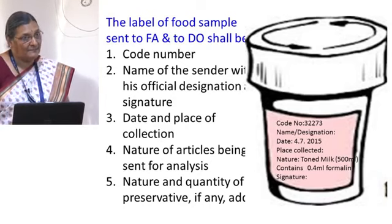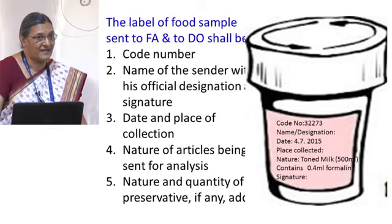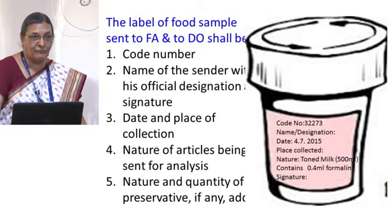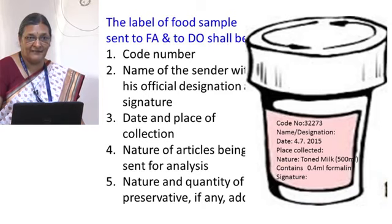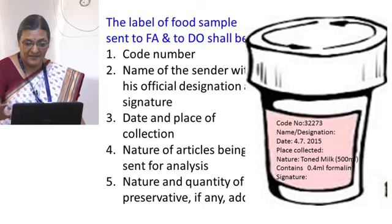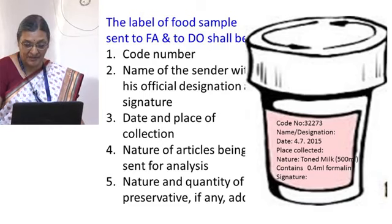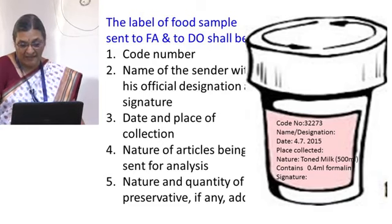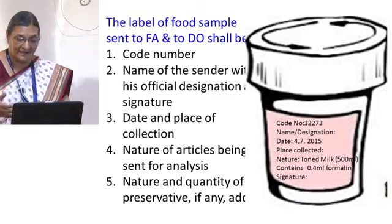If any preservative is added, how much must be written on the container. For milk samples, formalin is added as a preservative — 0.4 ml for 500 ml of milk. You can see on the container it has a code number, the name and designation, and the date of collection. Analysis of all official samples is carried out by either the NABL-accredited lab recognised by FSSA, the food analyst state public health laboratory, or the referral laboratory.